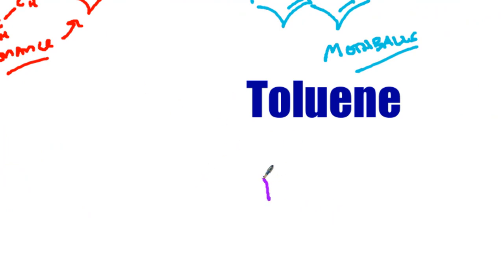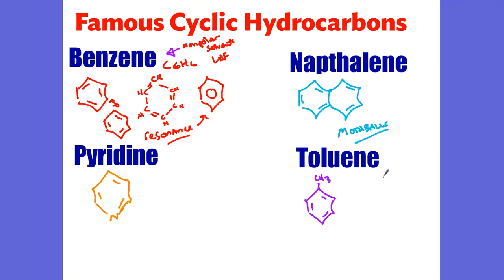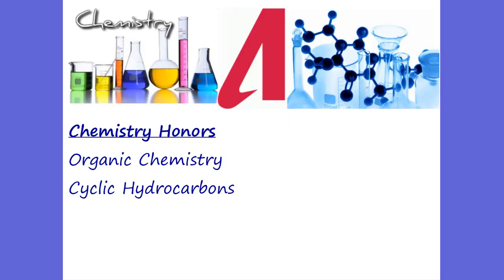Toluene looks like benzene with a methyl group coming off of the end. Why is toluene very famous? We use toluene as an octane booster in gasoline. Benzene is used as a paint thinner and obviously a great solvent. These are really famous cyclic hydrocarbons and great solvents. The one you really need to know is benzene. So that is our cyclic hydrocarbons, and that's all I got for you today.